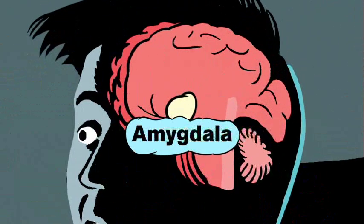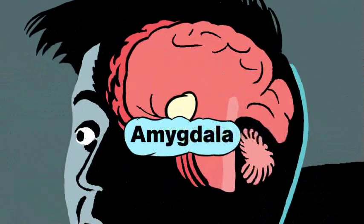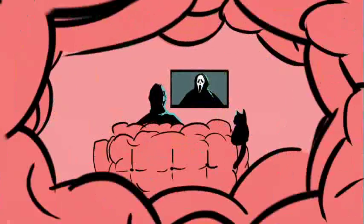Your amygdala is a part of your brain that plays a key role in emotional processing. When it perceives a real threat, or even just a virtual threat in a horror flick, it shoots a distress signal to your brain's control center, the hypothalamus.